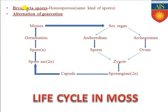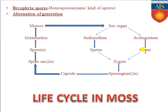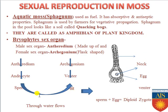Bryophyte spores are homosporous because they produce only one kind of spore. They also show alternation of generation or metagenesis. In mosses, the male sex organ antheridium and female sex organ archegonium produce sperms (from androcytes) and ovum respectively. The sperm travels to the ovum through water, forming the zygote with 2N chromosomes.